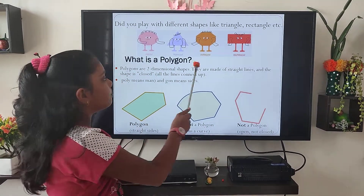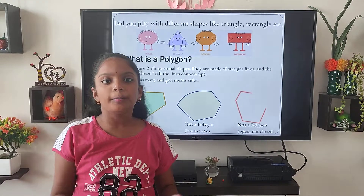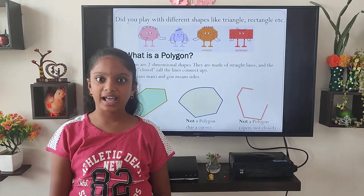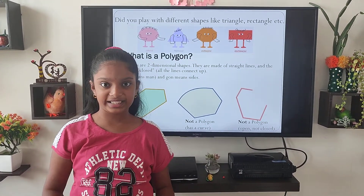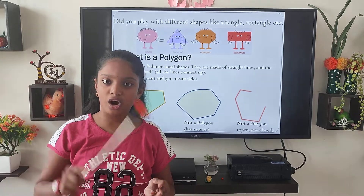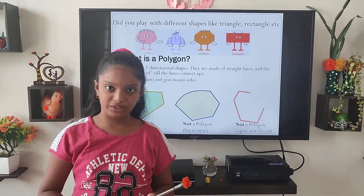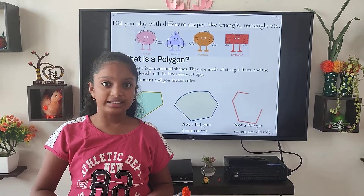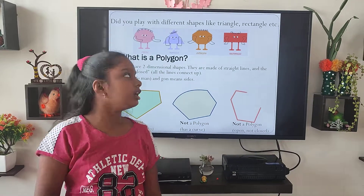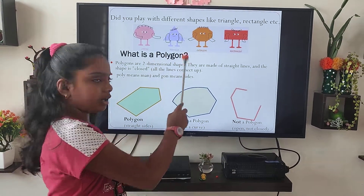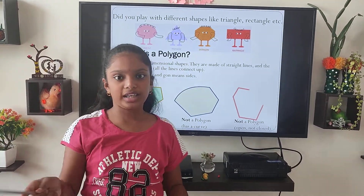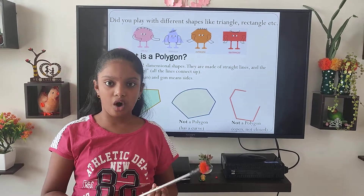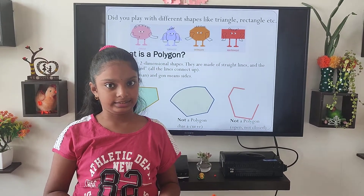What is a polygon? A polygon has straight lines. It is not an open figure — it is a closed figure. In the word polygon, 'poly' means many and 'gon' means sides.